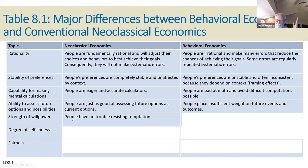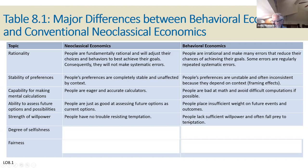People are eager and accurate calculators according to neoclassical economics. Behavioralists say people are bad at math and avoid difficult computations if possible. Ability to assess the future: according to neoclassical thinking, people are good at assessing future options as current options. We found, though, that people place insufficient weight on future events and outcomes — they value the present, not the future — and they make mistakes when thinking about the future. Strength of willpower: neoclassical economists said we can resist temptation and make rational decisions.